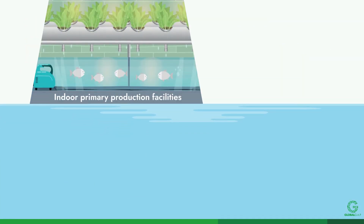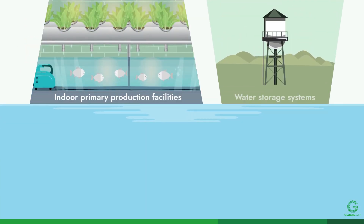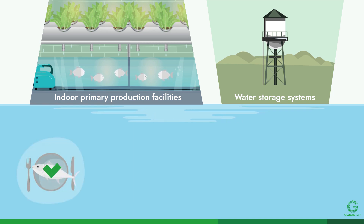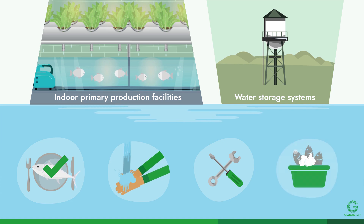Indoor primary production facilities and other water storage systems must maintain a supply of water fit for their intended purposes. The water in all storage systems shall not compromise food safety, handwashing, equipment, or post-harvest washing.